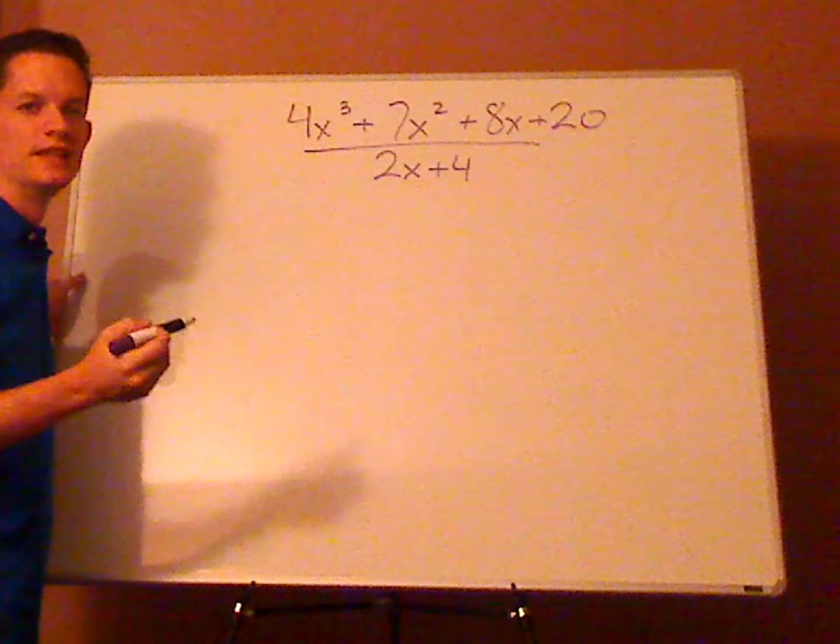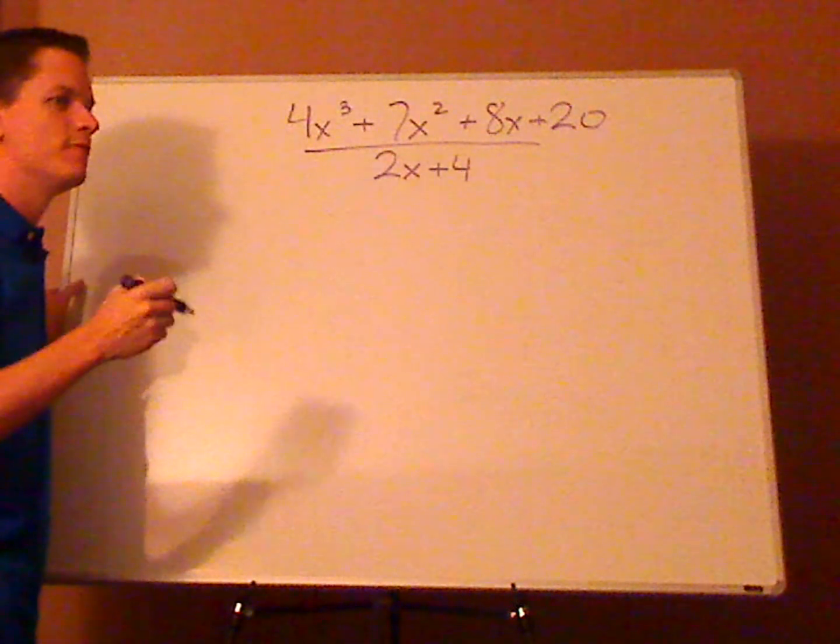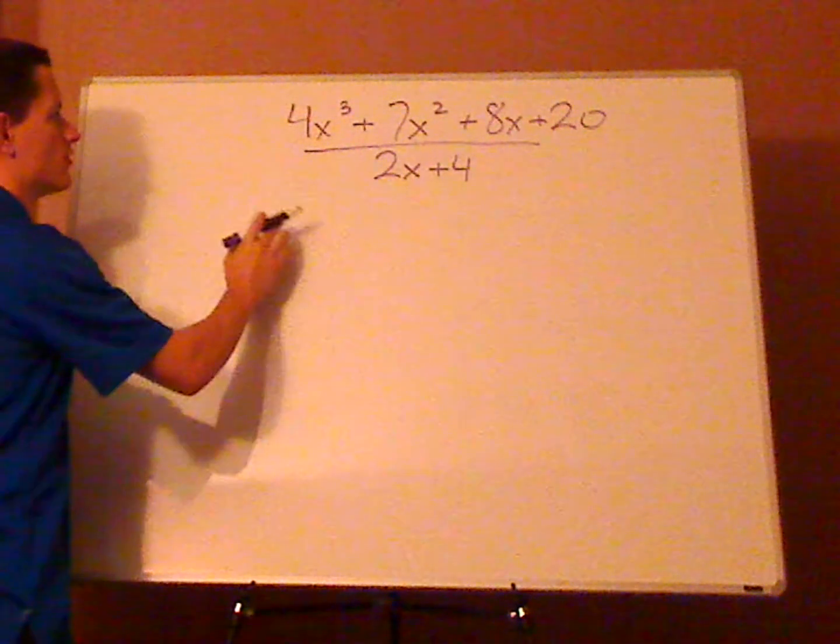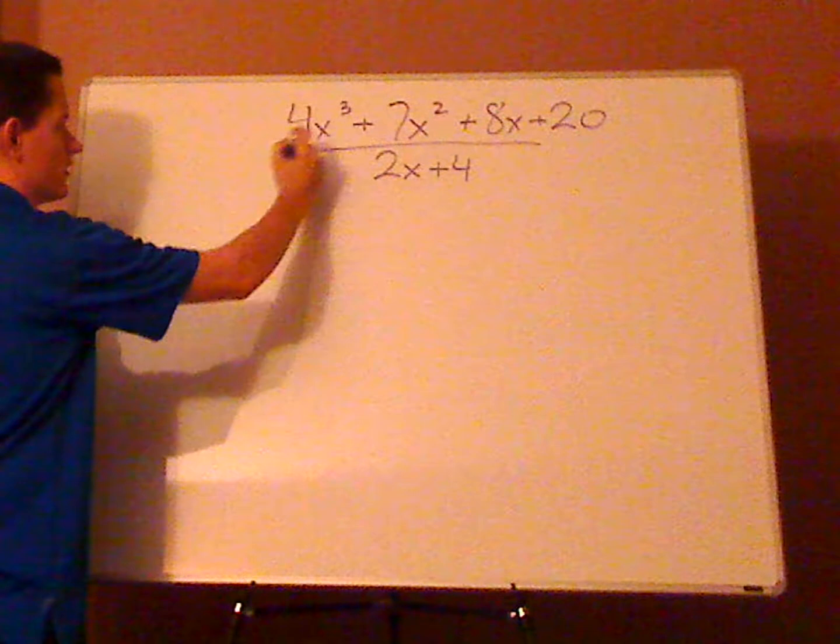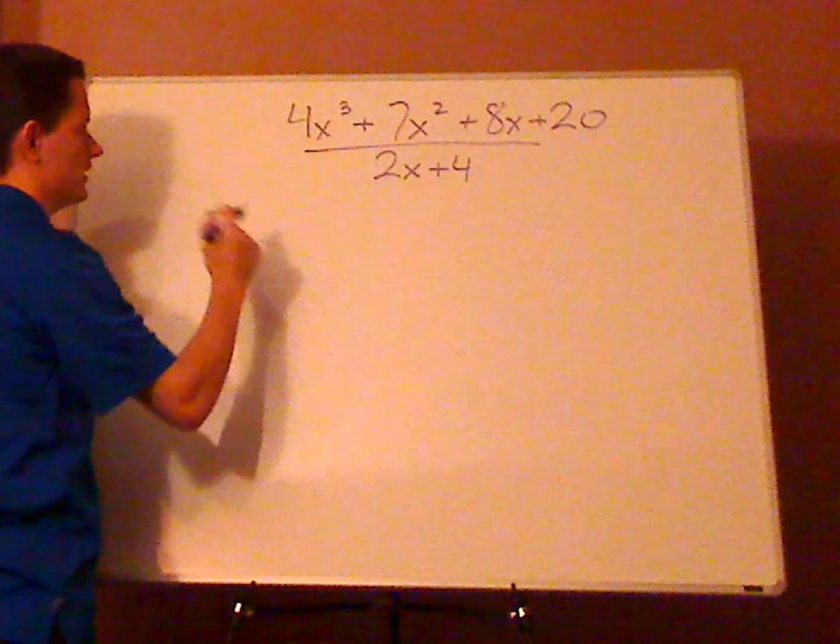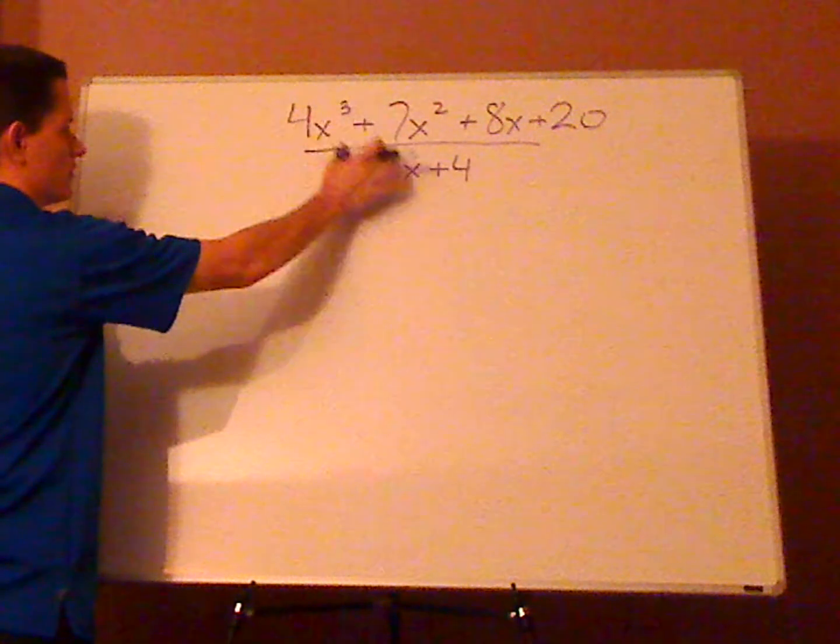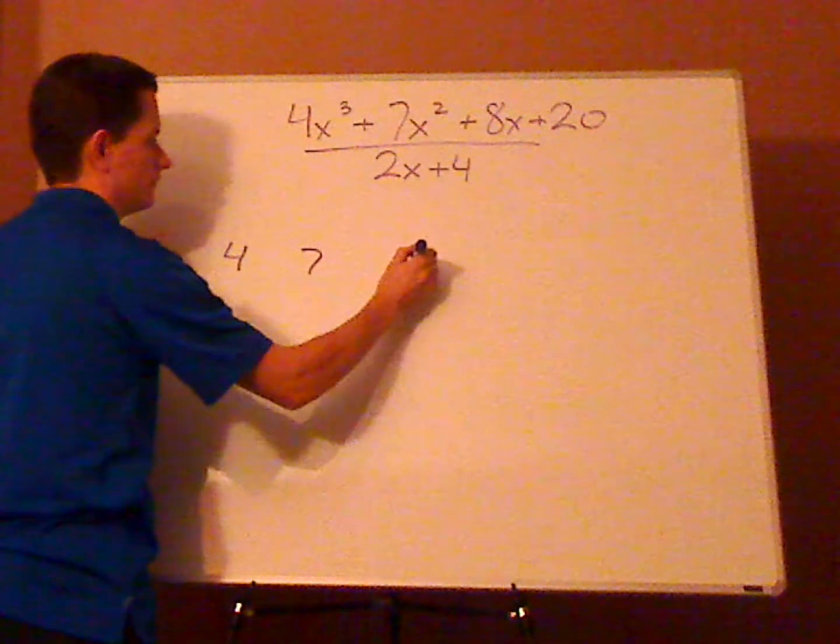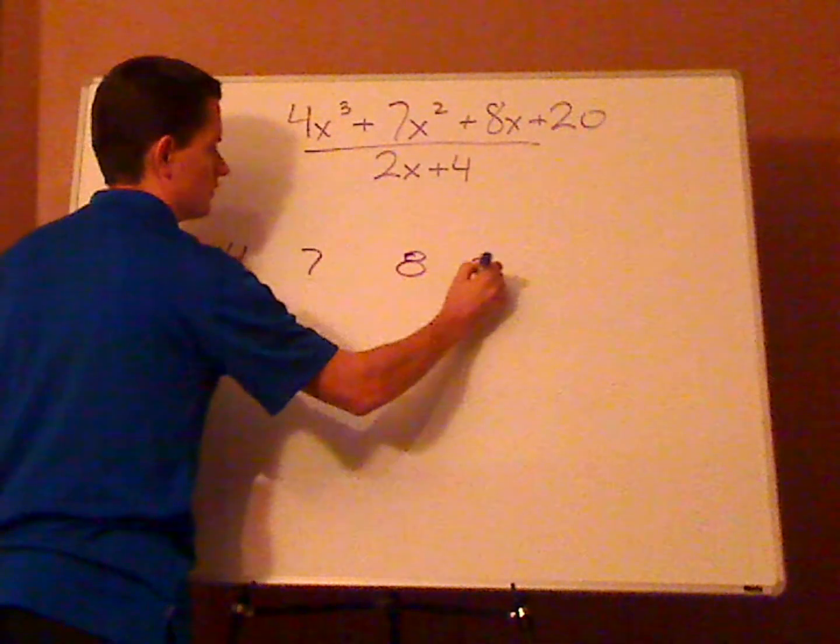So, it's going to look somewhat familiar and somewhat different at the same time. First, list out the coefficients of your dividend, which is what you're dividing into. So that's 4, 7, 8, 20.